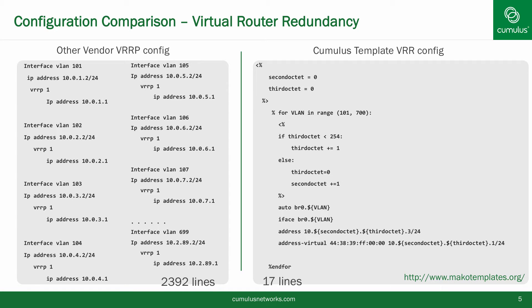More information on this can be found at the Mako template URL shown here. You don't have to worry about the Mako script not putting the config in the correct order, as Cumulus Linux automatically puts the config in the correct order before applying it. As a side note, in this case we're using the same virtual MAC address for each VLAN, but if desired, that could also be a variable. So let's look at the demo setup, which I'll be using this exact simple script.